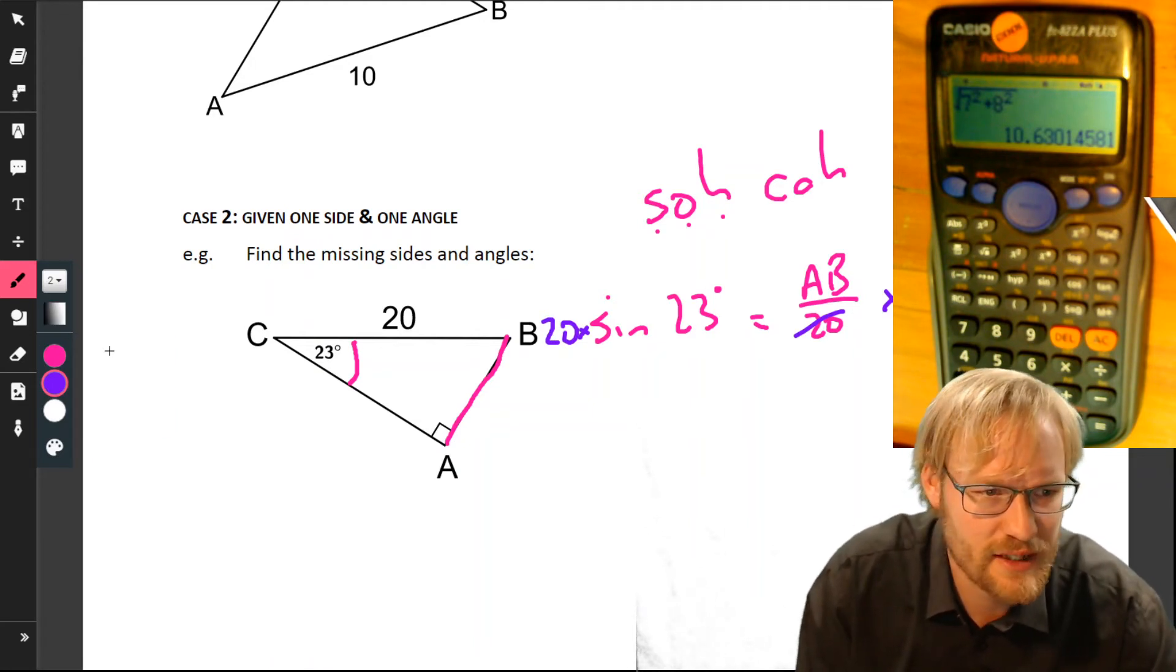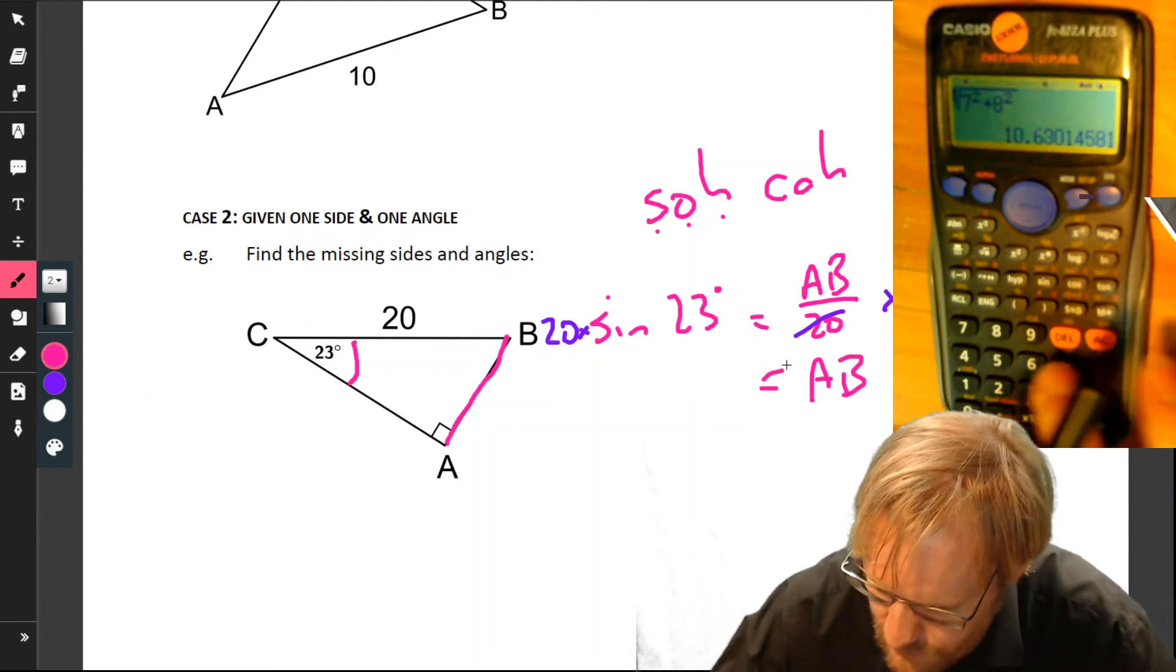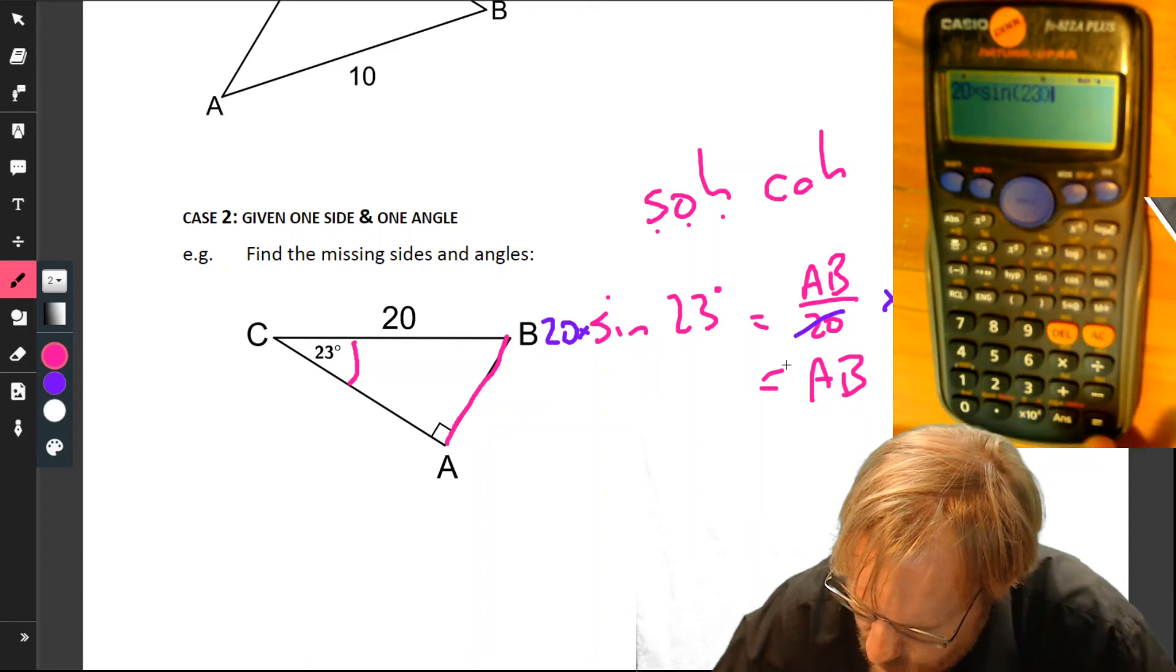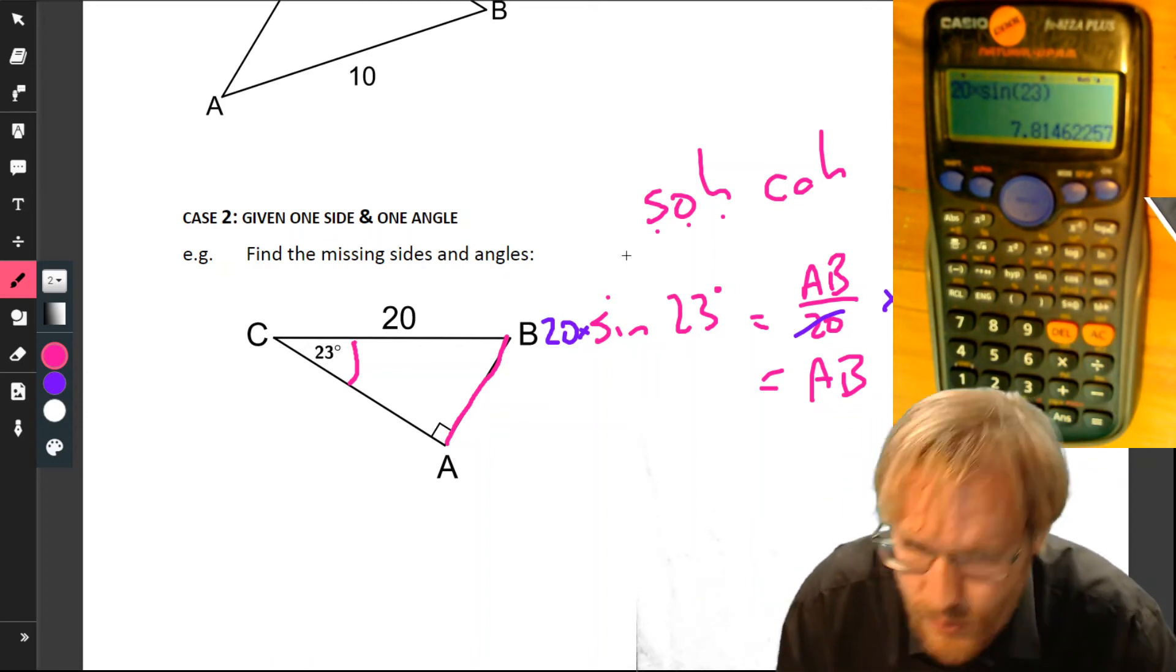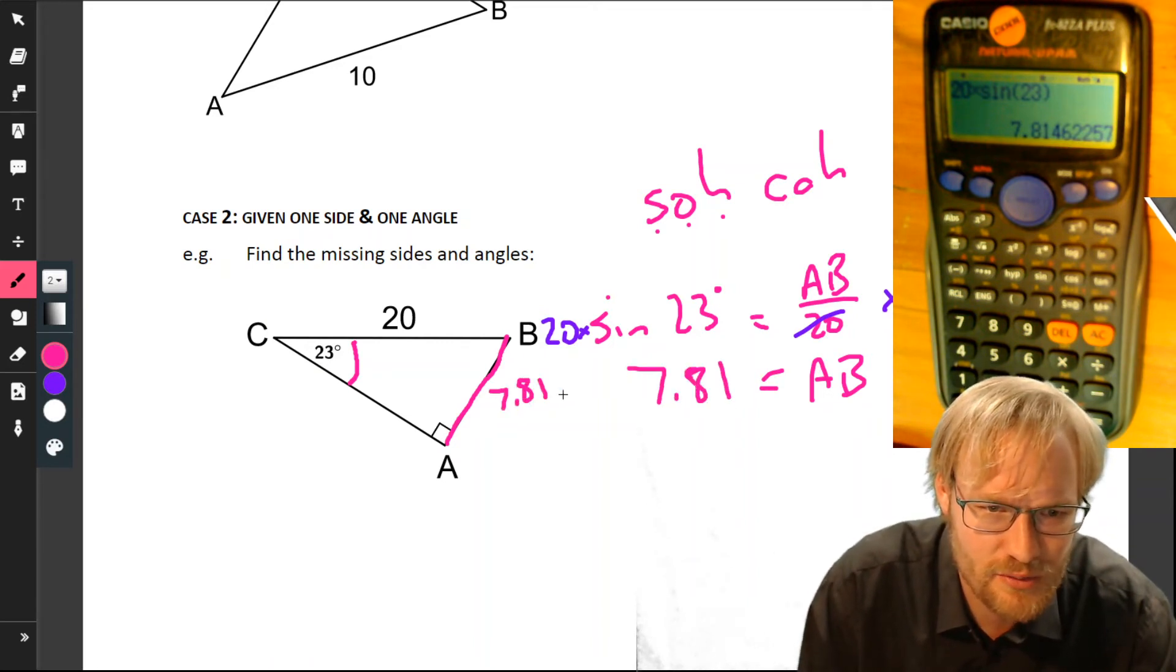Equation to solve. We want to find AB, so let's multiply that by 20 so those cancel. What we do on one side we do on the other. So AB equals 20 times sine 23. Calculator: 20 times sine 23, close bracket, equals 7.81.